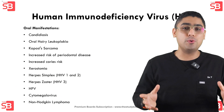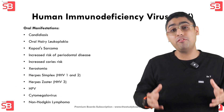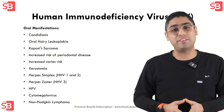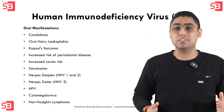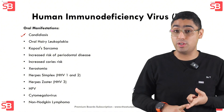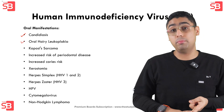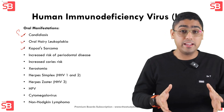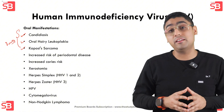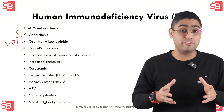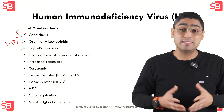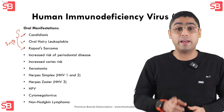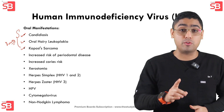Moving on to oral manifestations — these are often some of the earliest signs of HIV infection. Common conditions include candidiasis, i.e. thrush, oral hairy leukoplakia and Kaposi's sarcoma. Candidiasis or thrush is a fungal infection causing white patches in the mouth. The second condition is oral hairy leukoplakia, which is caused by Epstein-Barr virus.